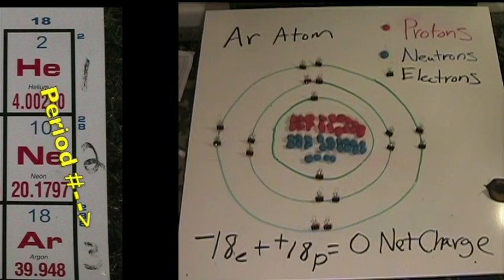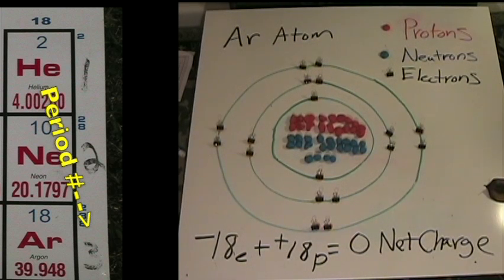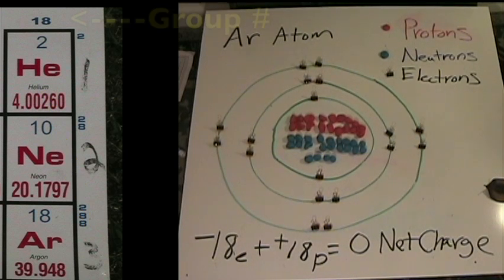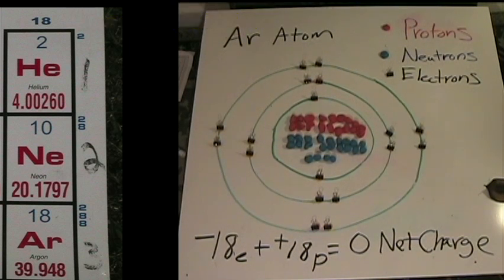The argon atom has three energy shells because it's in period three. And it has eight electrons on the outer shell because it's a noble element. Noble elements have full outer shells of eight electrons, except for helium. The charge is negative 18 electrons plus positive 18 protons, which equals a zero net charge.